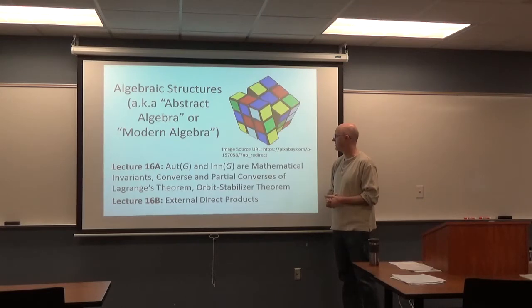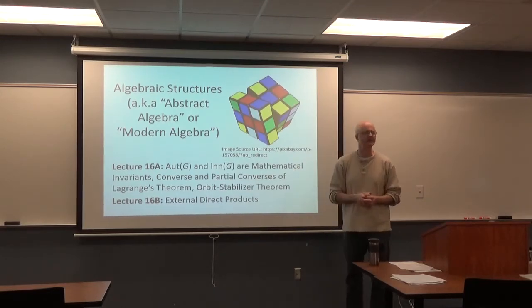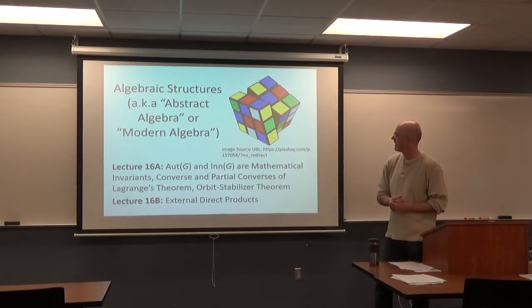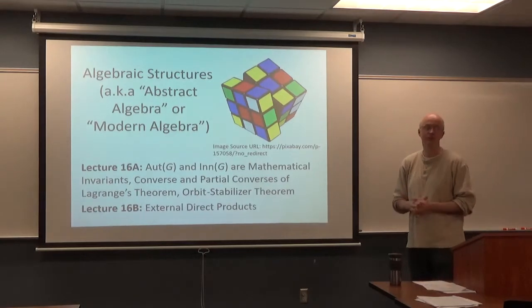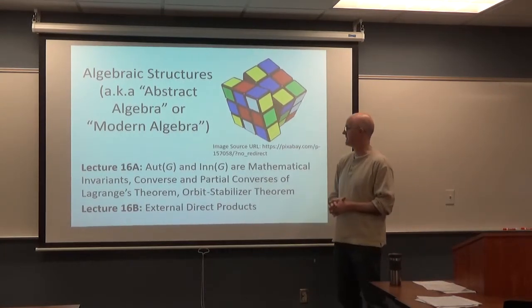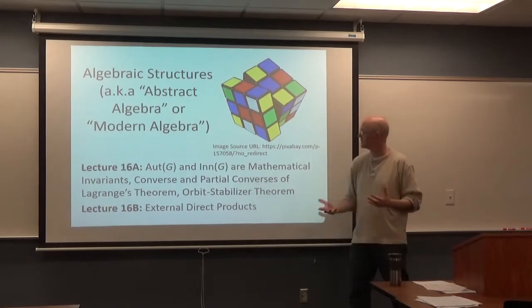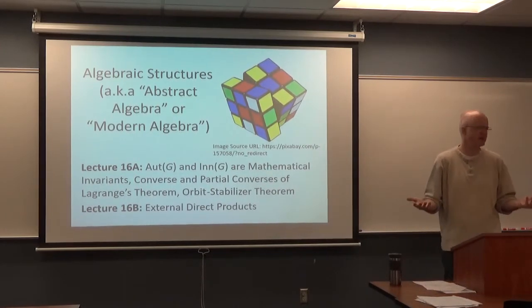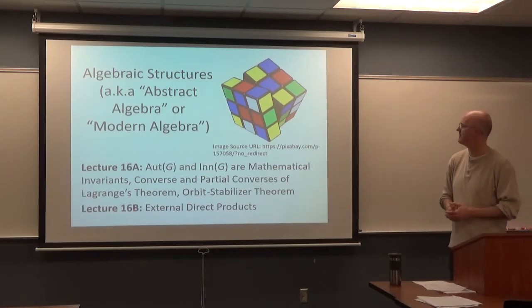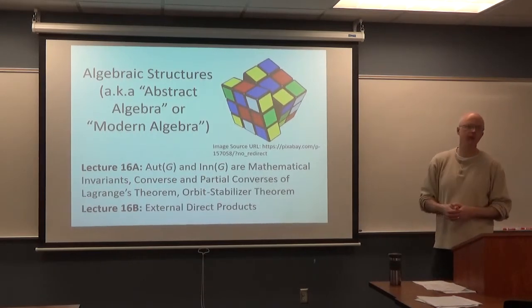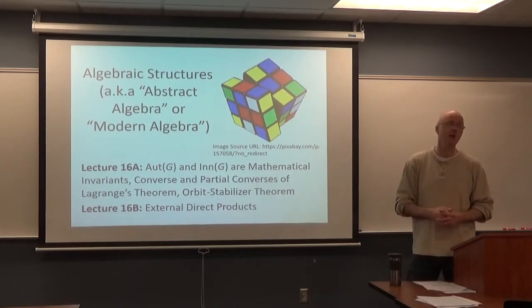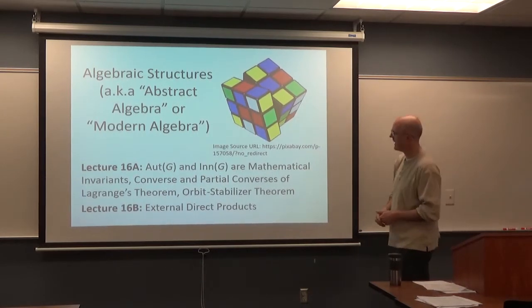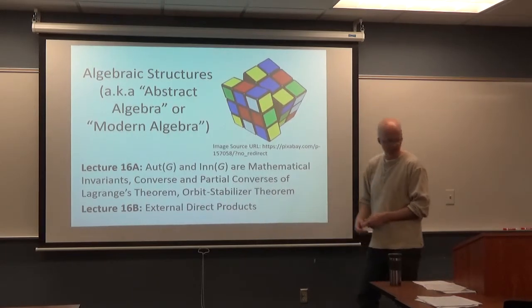We'll review again Aut(G) and Inn(G). We'll emphasize that they are examples of something called mathematical invariance. Look at the converse of Lagrange's theorem and see again that it's false and verify that it's false with an example. But you might wonder, are there partial converses of Lagrange's theorem that might be true? Then we'll look at the orbit stabilizer theorem. Probably next time we'll look into some applications of it. Then in lecture 16B, we're going to focus on chapter eight on what are called external direct products.